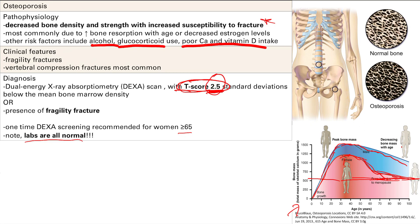To prevent osteoporosis, one way is to encourage weight-bearing exercise, which helps increase bone density. The other is to have appropriate intake of calcium and vitamin D — not a lot, just sufficient for good bone mineralization. That's how you prevent osteoporosis.